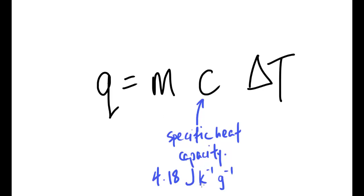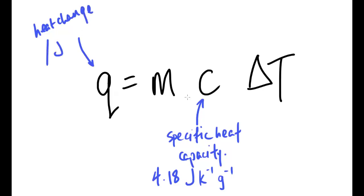Note that C is in joules. Q, on the far left, is our heat change, and this is also measured in joules. We can't have one thing measured in kilojoules and another in joules — it just wouldn't work, it'd be a disaster. So make sure both are in joules.